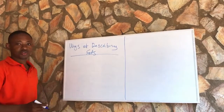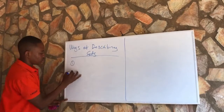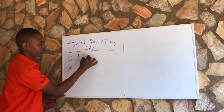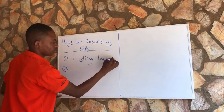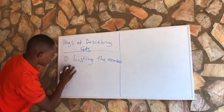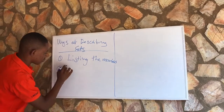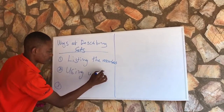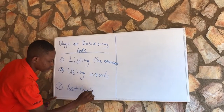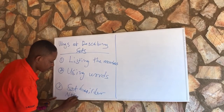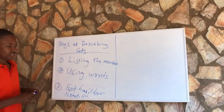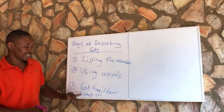There are three ways of describing sets. These three ways are: listing the members, using words, and then using set builder notation.